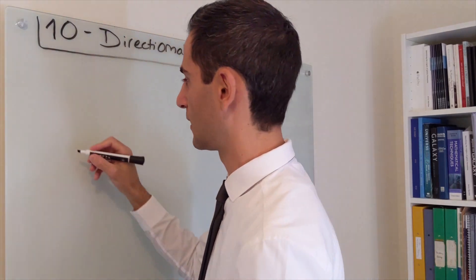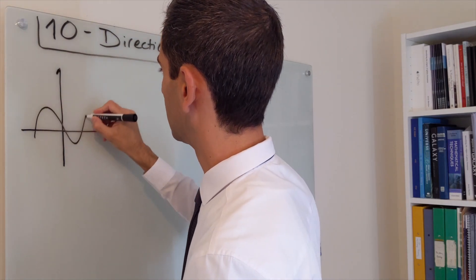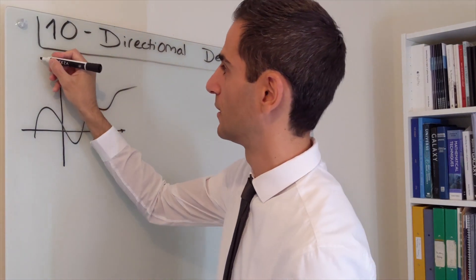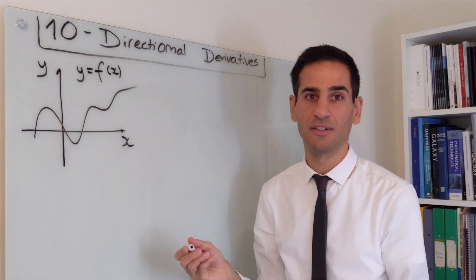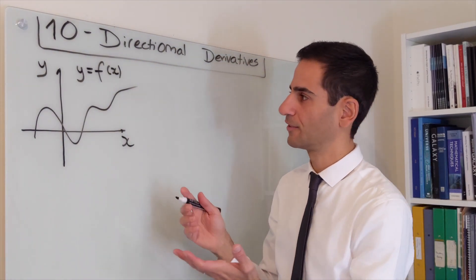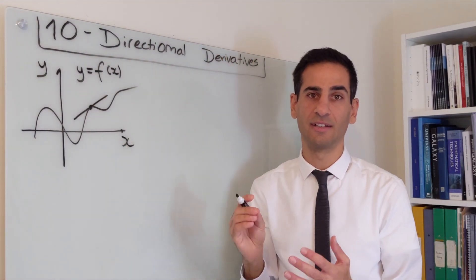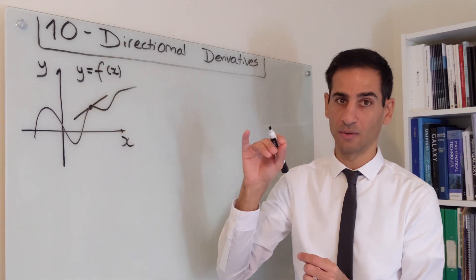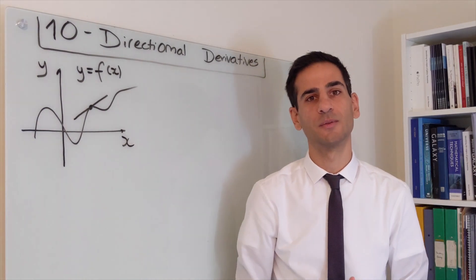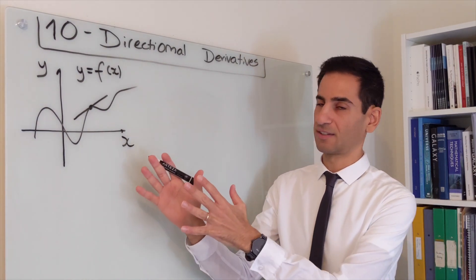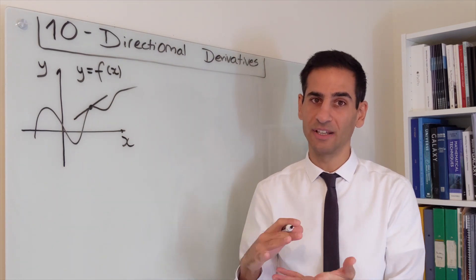One thing to realize is that when we started Physics 101 and we were looking at any random curve y of x — where y would obviously be a function of x — we've seen how taking a derivative at a specific point is really about finding the tangent line, the line that touches that point only, and that gives us the rate of change. In Section 10, for directional derivatives, what we'll be looking at is an extension of this to higher dimensions.